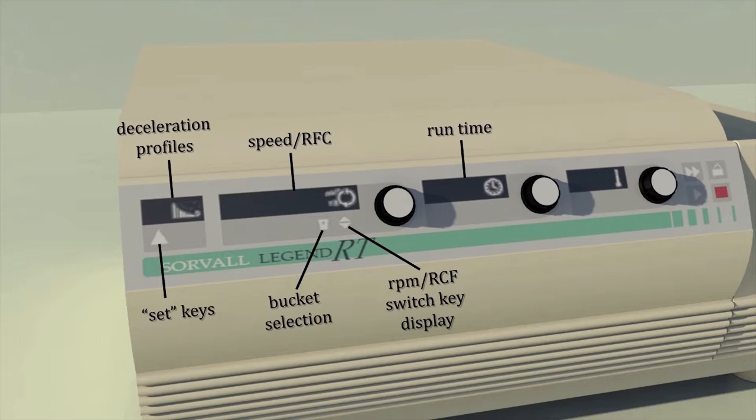On the extreme left, we see a display called deceleration profiles and a set key. Deceleration is how fast the rotor slows down. If you are running some cells that do not pellet very tightly or if you are running some type of gradient, you do not want the rotor to decelerate too rapidly.